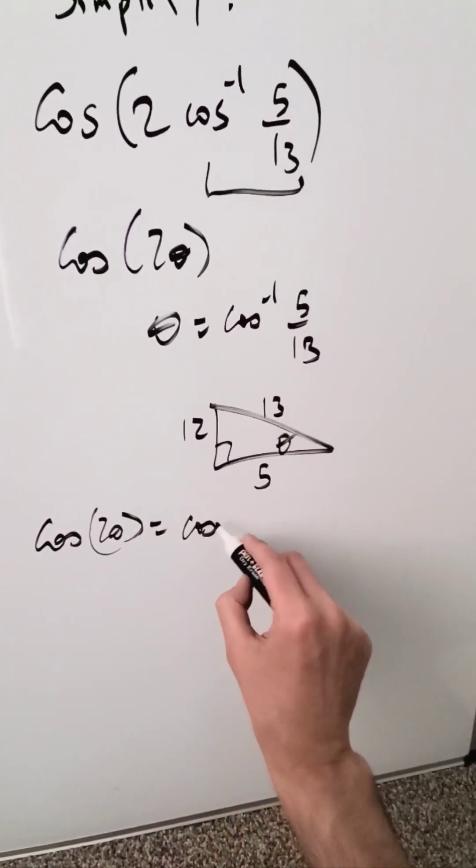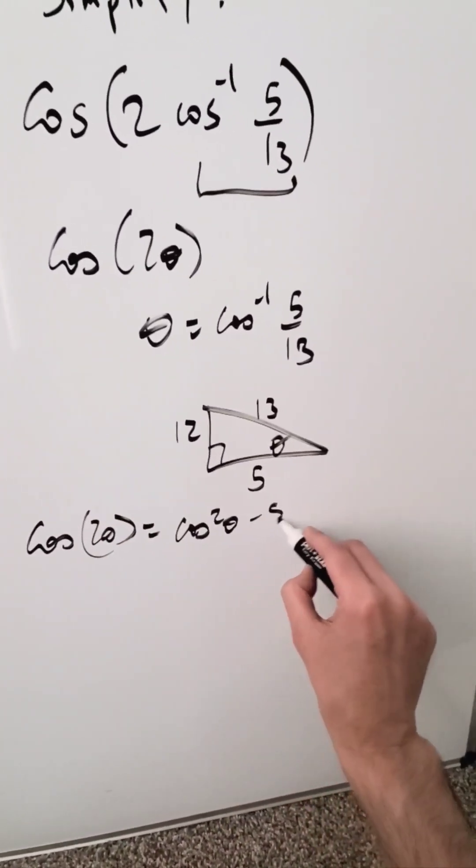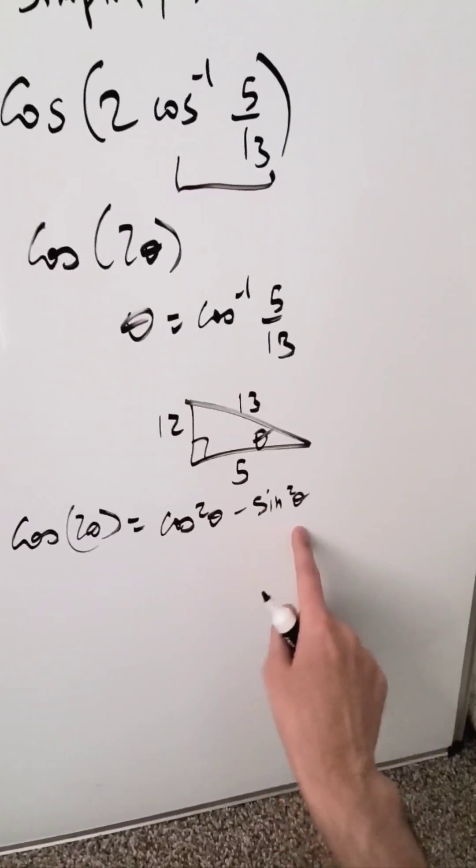It's equal to cosine squared theta minus sine squared theta. Use this triangle to evaluate this.